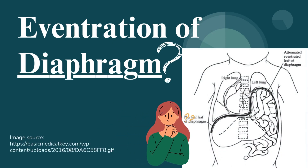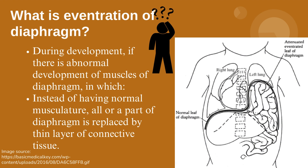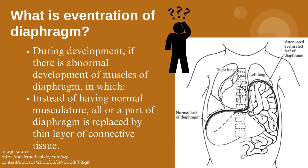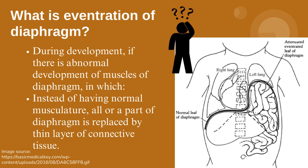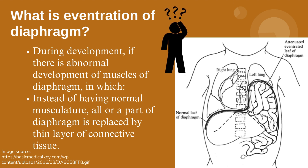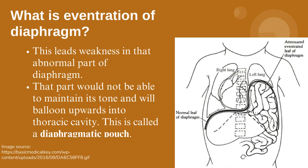Eventration of Diaphragm. What is Eventration of Diaphragm? During development, if there is abnormal development of muscles of diaphragm, in which instead of having normal musculature, all or a part of diaphragm is replaced by a thin layer of connective tissue. This leads to weakness in that abnormal part of diaphragm. That part would not be able to maintain its tone and will balloon upwards into the thoracic cavity. This is called a Diaphragmatic Pouch.